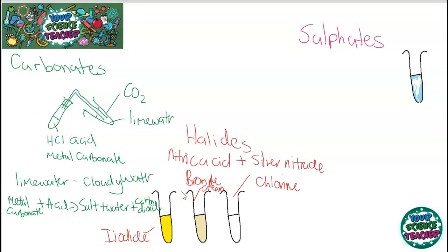Now for sulfate, it's a little bit different. This time you add hydrochloric acid and barium chloride. And with this reaction, what you should see if a sulfate is present, you will see a white precipitate formed. And what this white precipitate is, is it's barium sulfate. And barium sulfate is insoluble. And that is why you see that white precipitate.